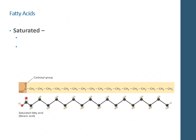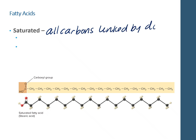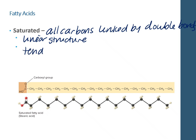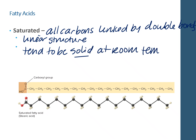There are two types of fatty acids. One is a saturated fatty acid. Saturated fatty acids have all carbons linked by single bonds, producing a linear structure with no kinks or bends. Saturated fatty acids tend to be solid at room temperature because they are straight — when they're straight, they can pack together tightly.